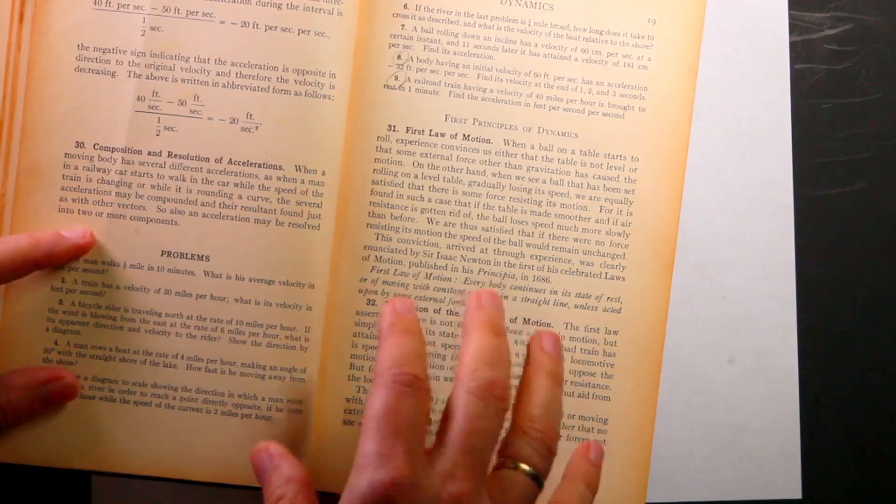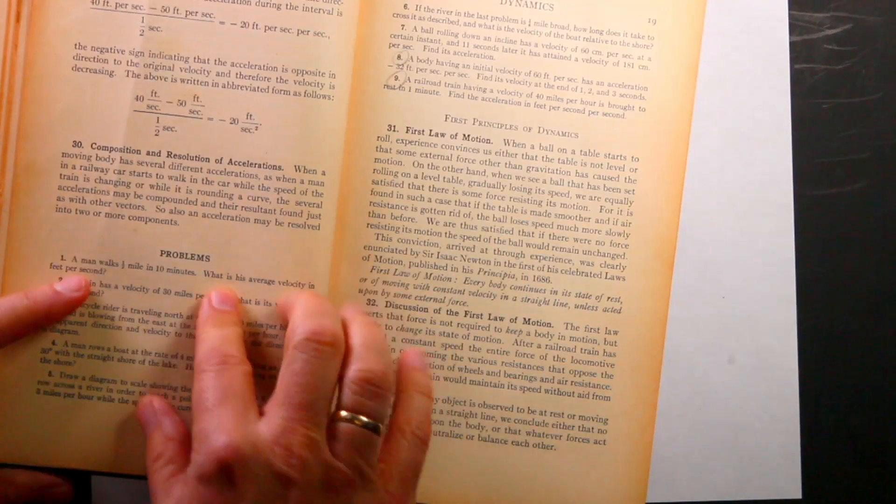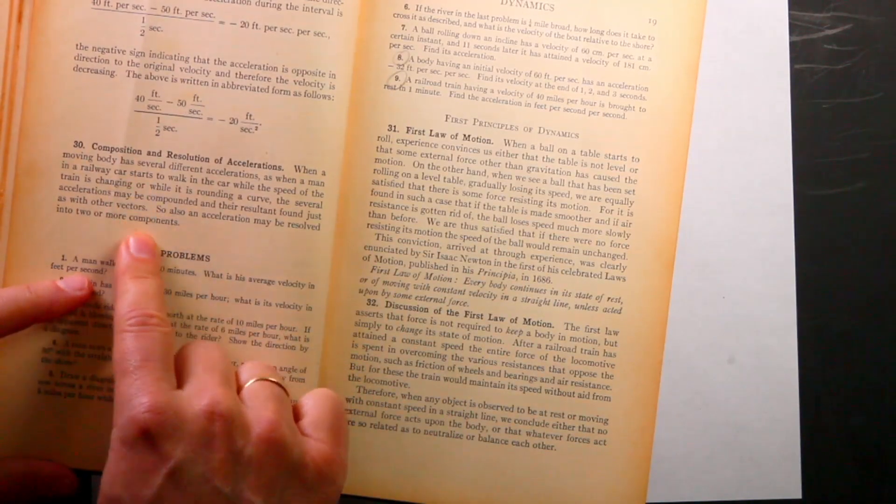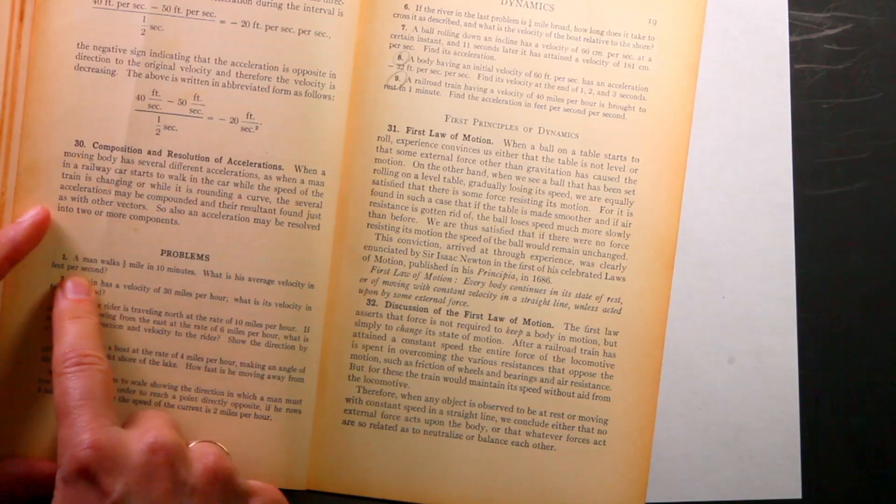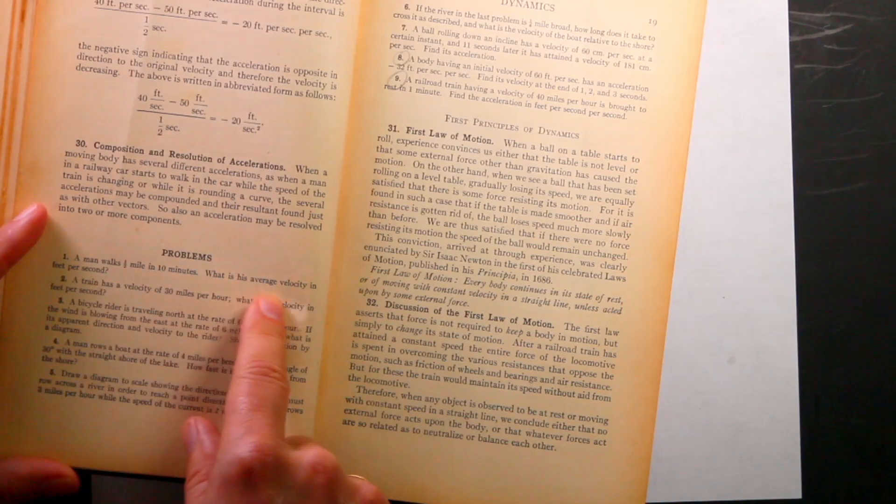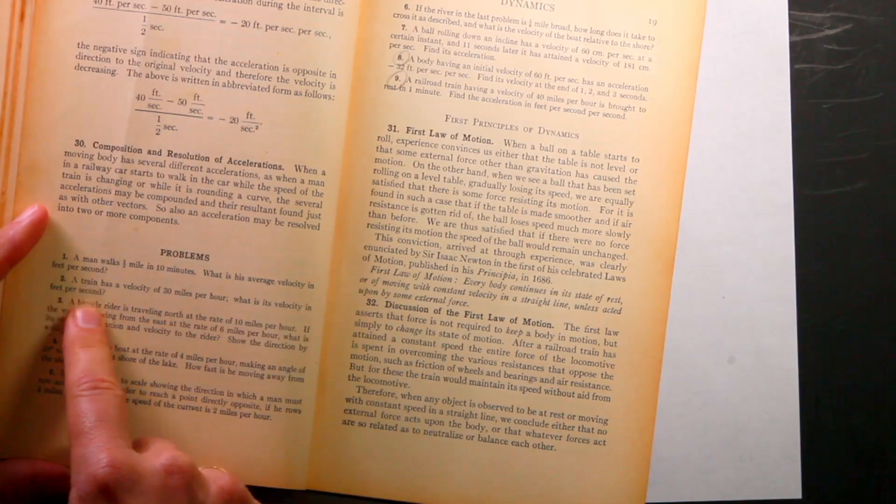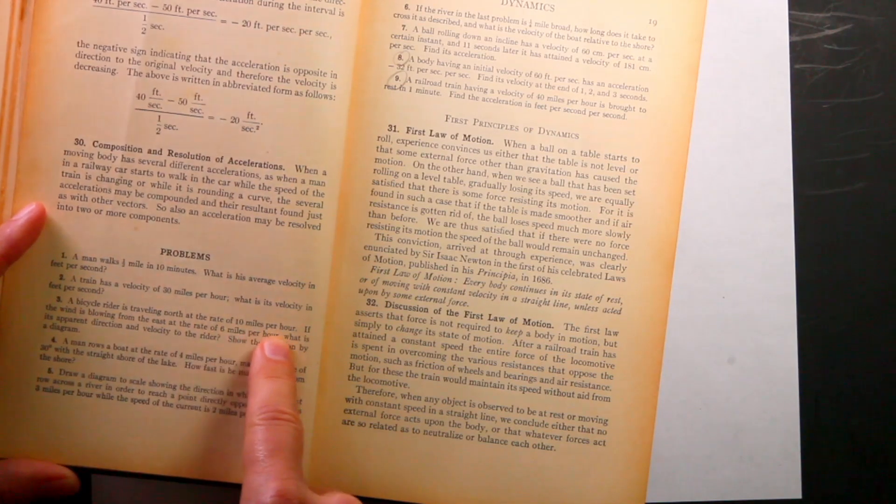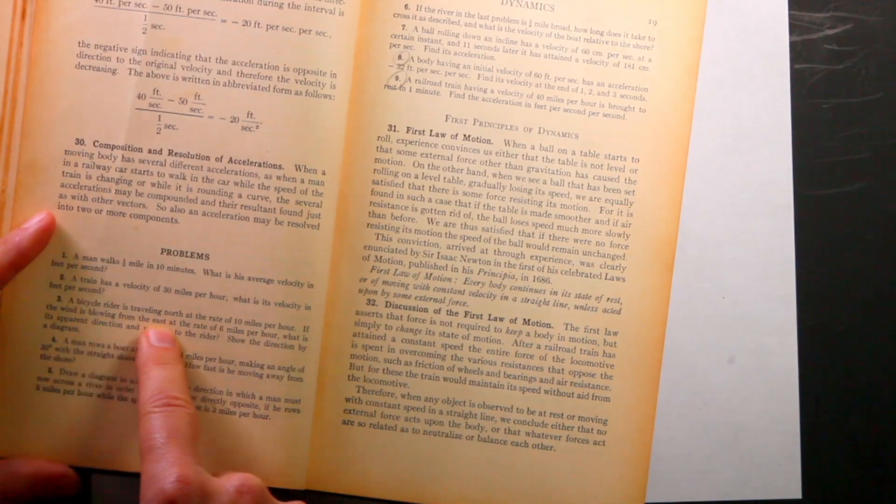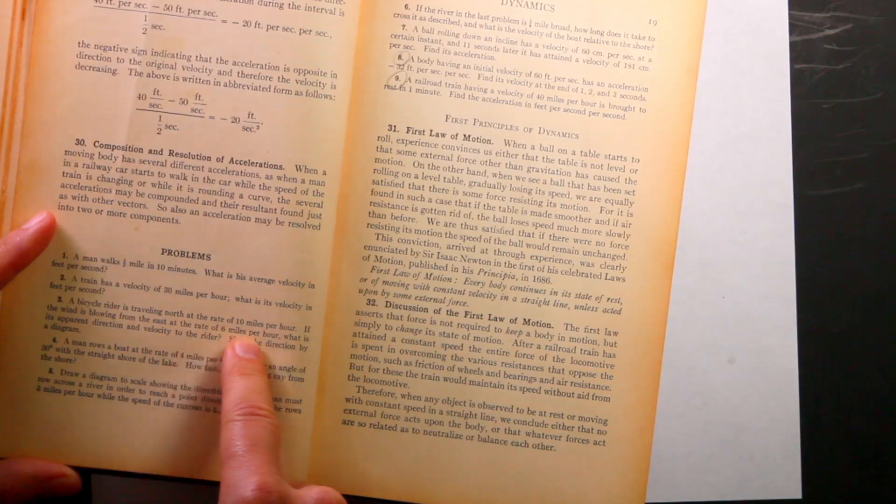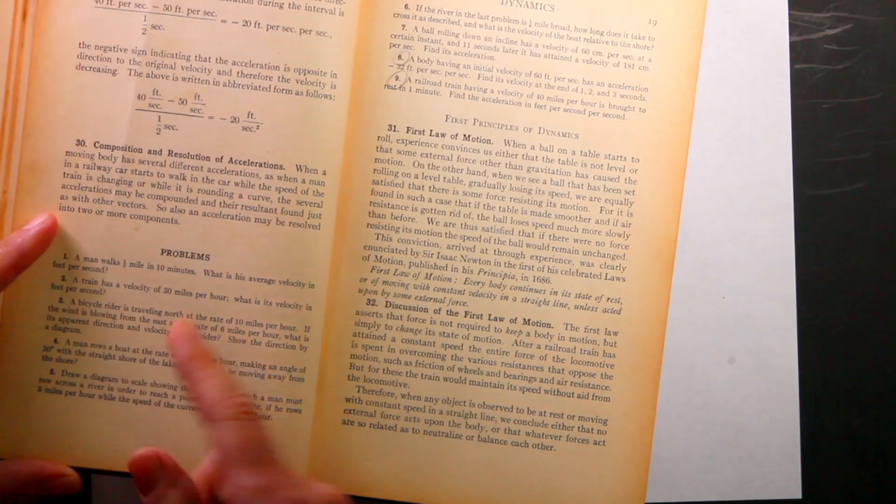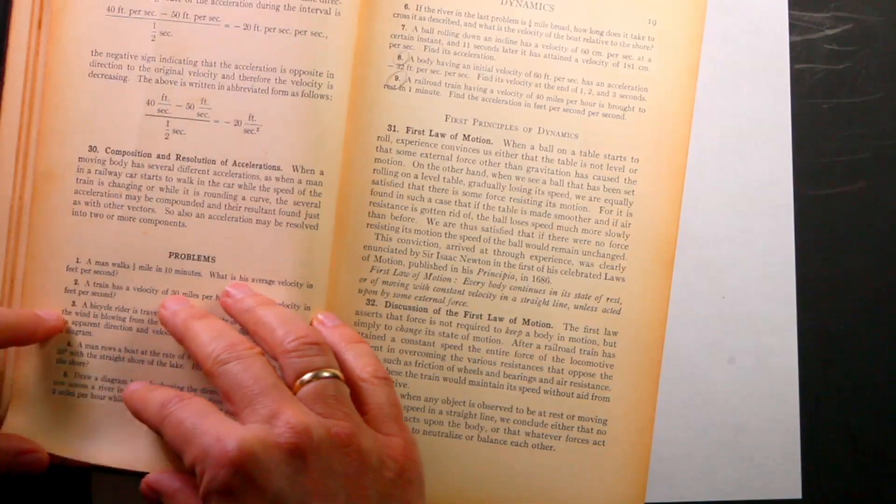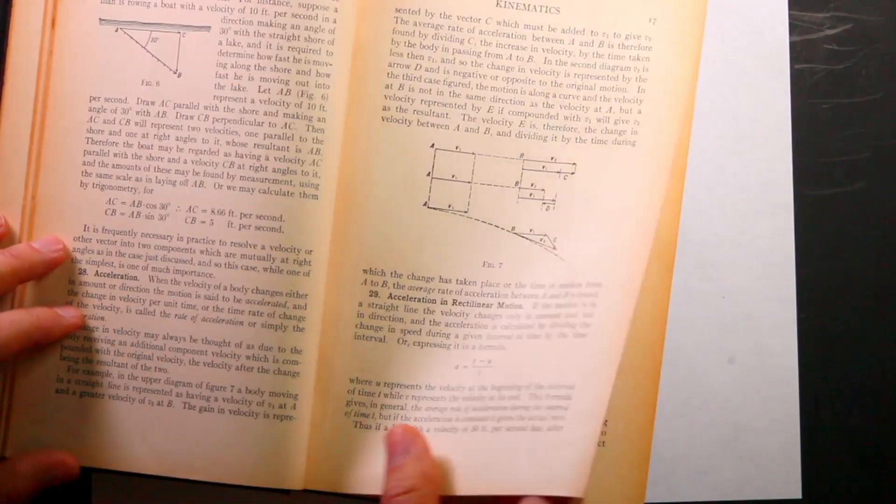And in textbooks, I don't know when they switched over to metric. But let's look at the homework. A man walks half a mile in 10 minutes, which is average velocity in feet per second. That's fine. A bicycle rider is traveling north at a rate of 10 miles per hour. If the wind is blowing from the east at a rate of six miles per hour, what's the apparent direction? That's a relative velocity problem. Did they talk about that?